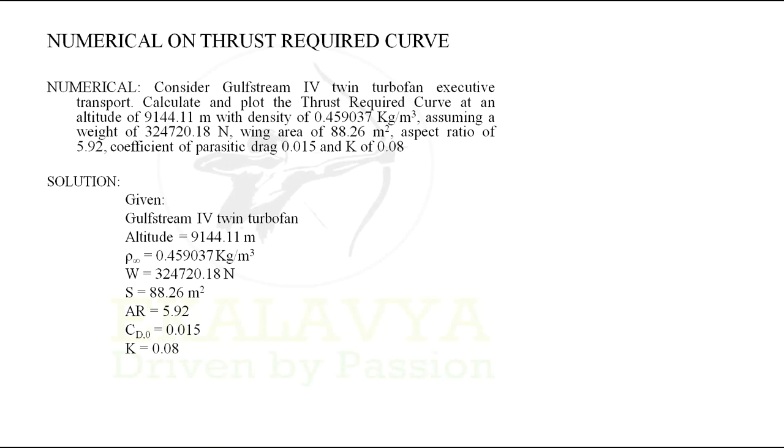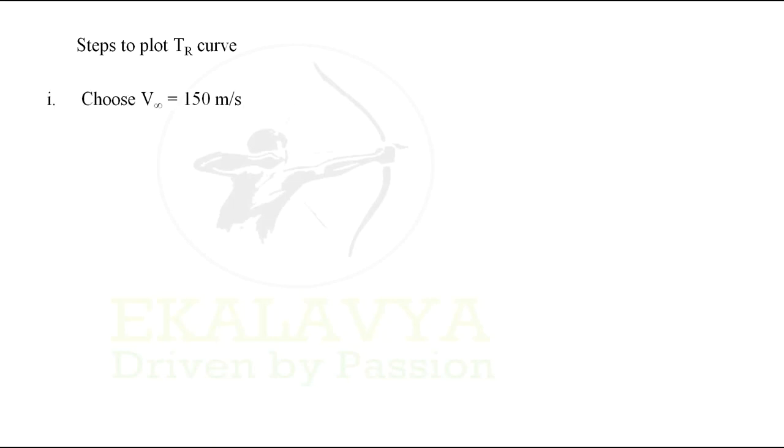With the given data extracted, the next step would be to identify what is asked in the question and establish to-dos. Here we need to calculate and plot thrust required curve. Recalling the steps to plot a thrust required curve, we have 5 steps. First step is to choose a velocity V∞. Let us choose a velocity of 150 m/s. Velocity chosen is some random value here. In a similar manner, we need to try for another value and compare with the nature of curve.